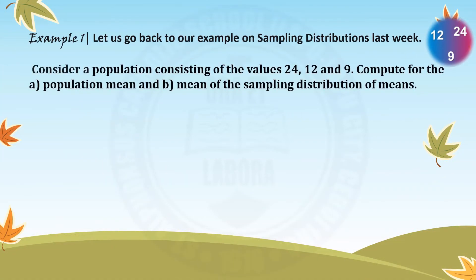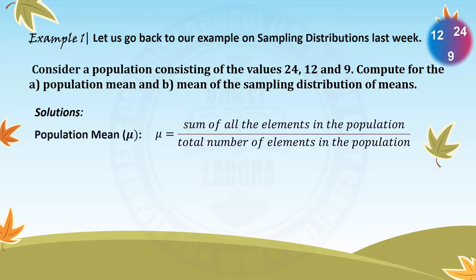For example number one, consider a population consisting of the values 24, 12, and 9. Let us compute for the population mean and the mean of the sampling distribution of means. The population mean is equal to the sum of all the elements in the population over the total number of elements in the population. Substituting all the elements and dividing by 3, the answer is equal to 15.